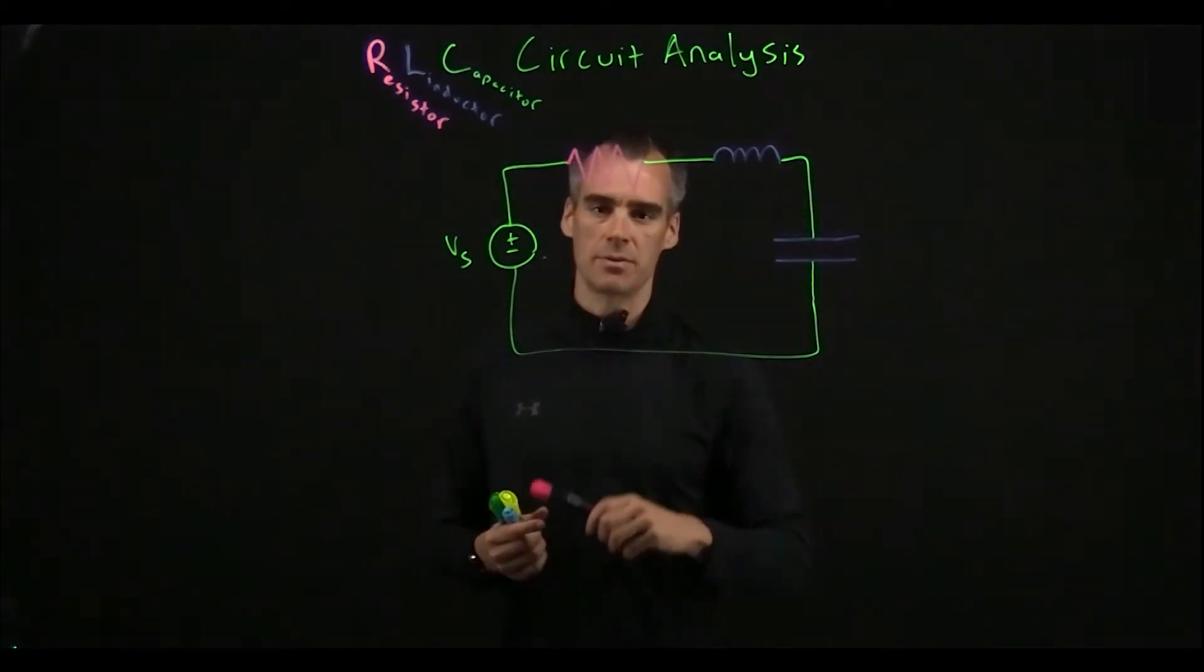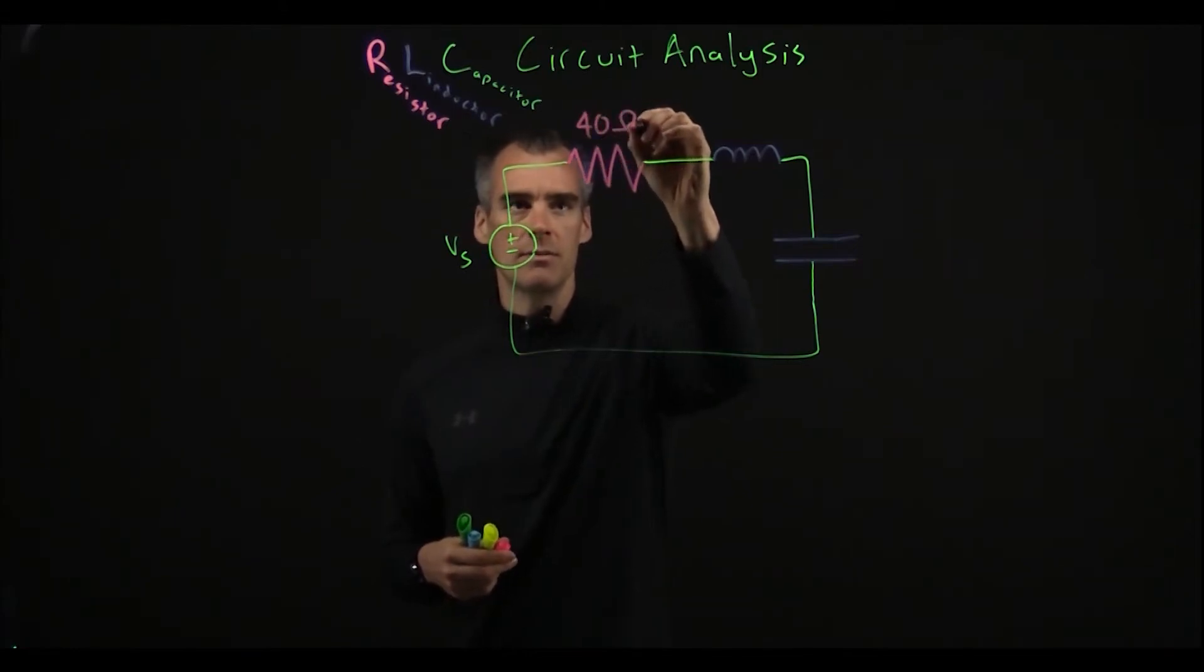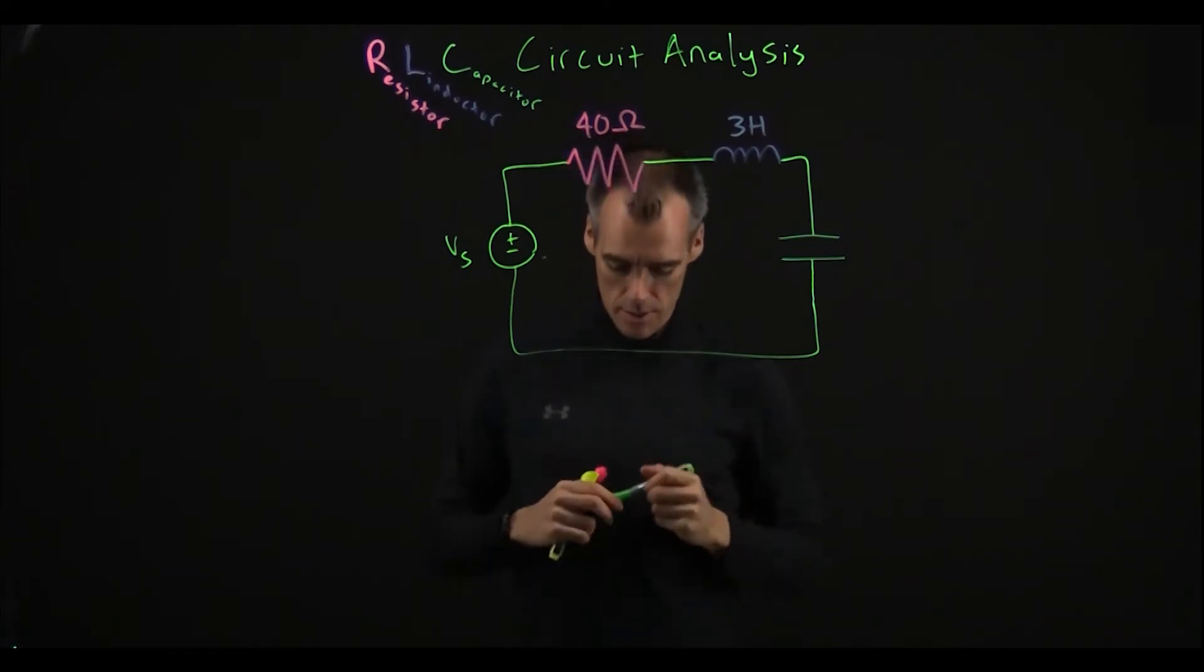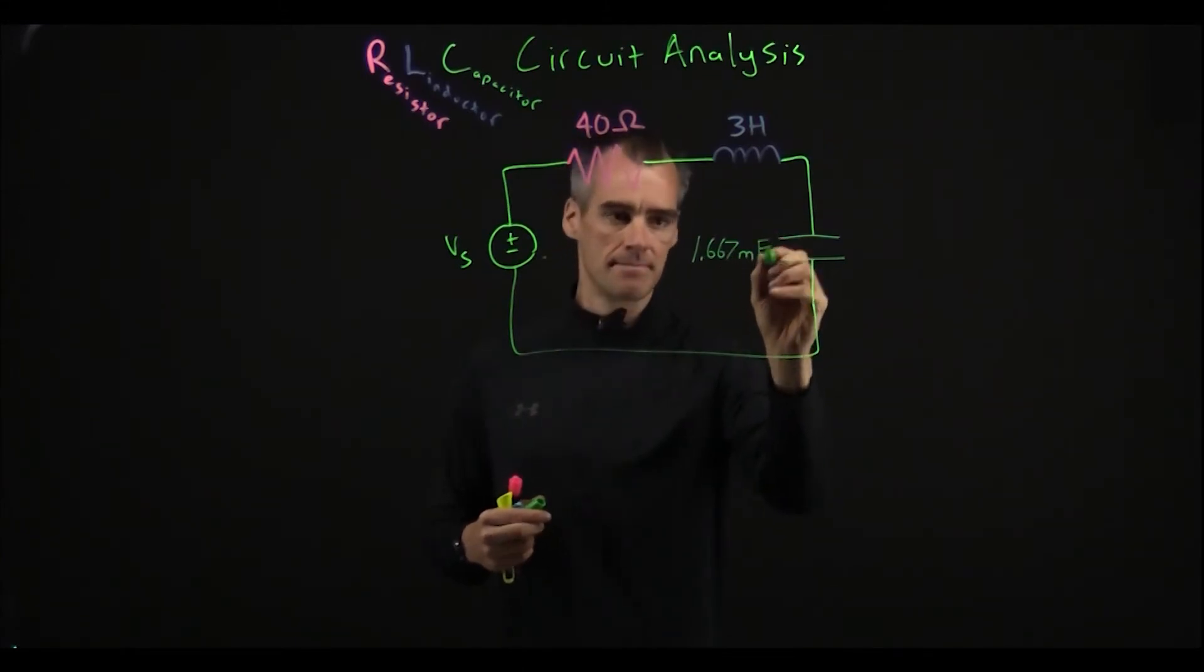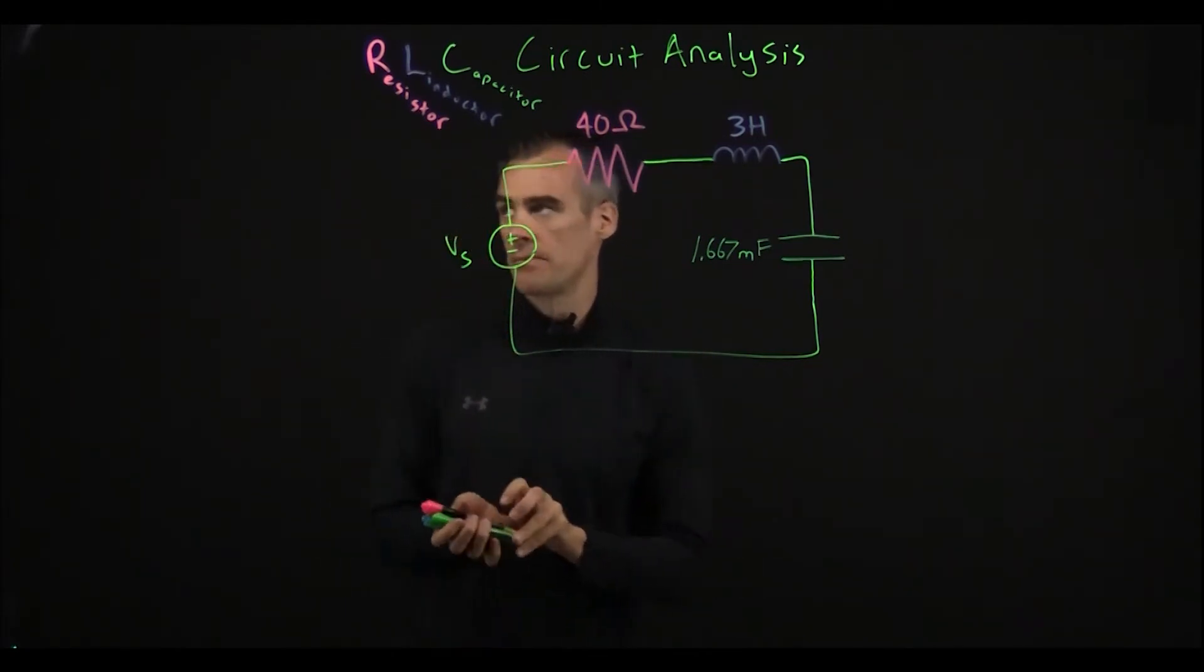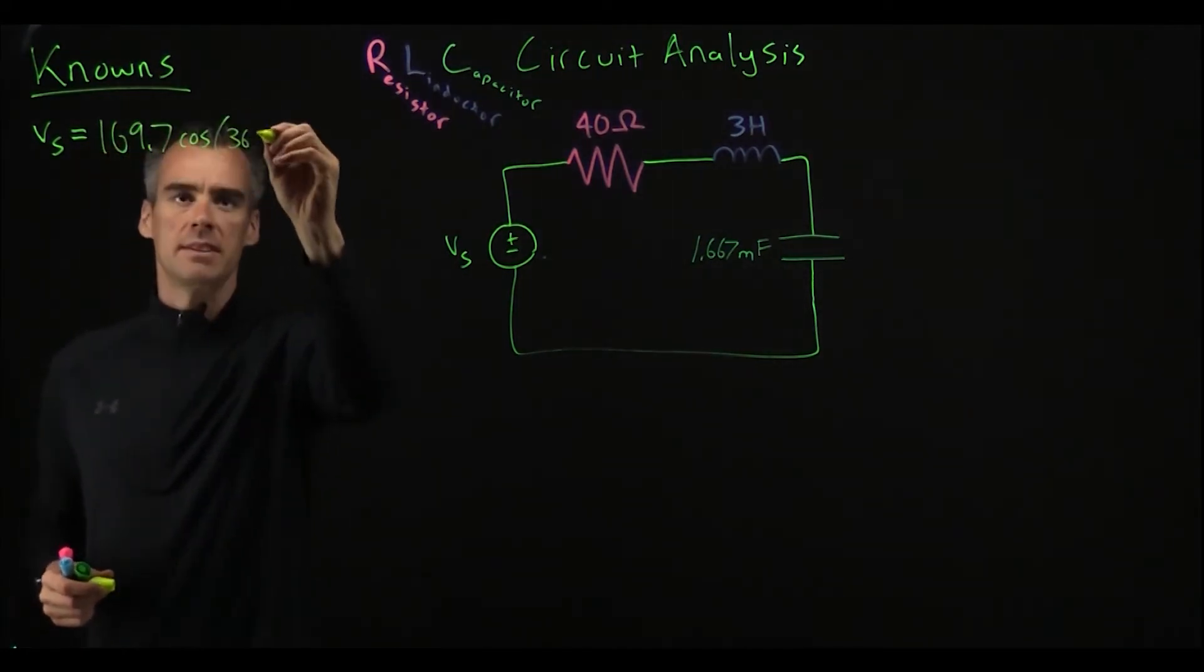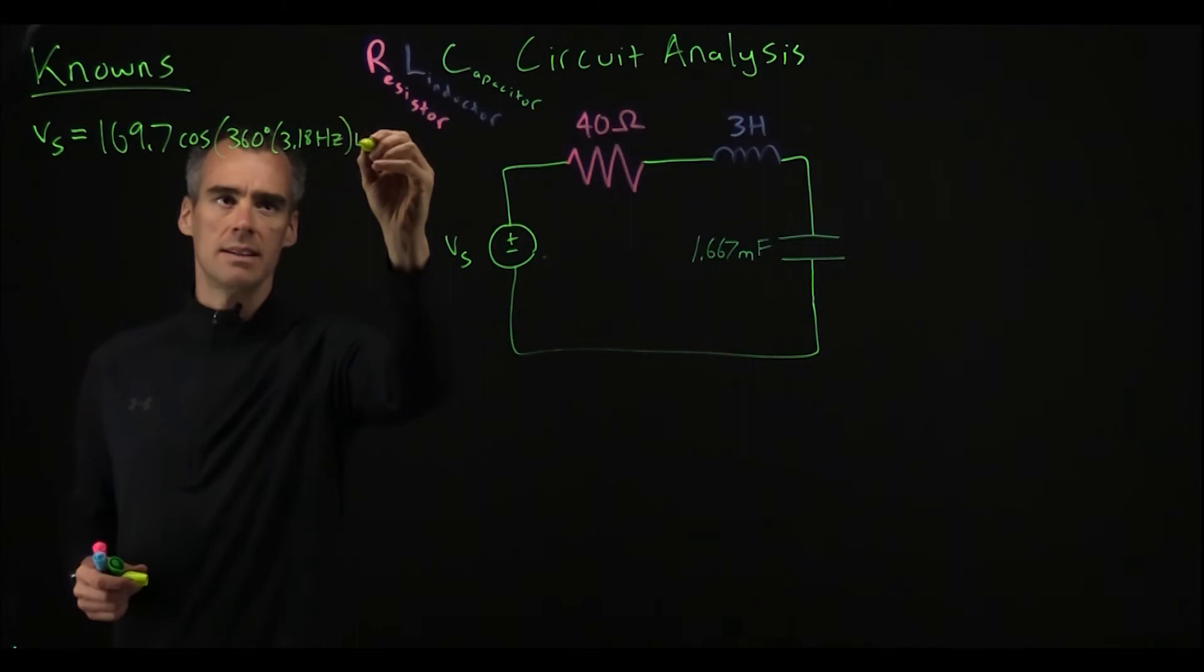In this problem we are given values for these three impedances. This first one is going to be 40 ohm, this resistor. That inductor is going to have a value of 3 Henrys. And that capacitor is going to have a value of 1.667 milli-farads. And we are given a voltage source. Let's go ahead and write down our knowns over here. We are given that our voltage source is equal to 169.7 cosine of 360 degrees times 3.18 hertz T plus 30 degrees.